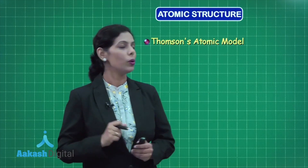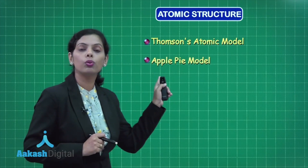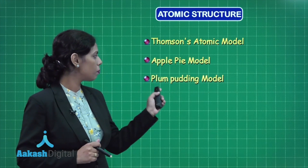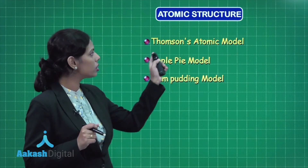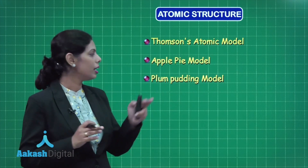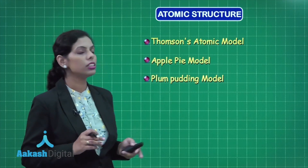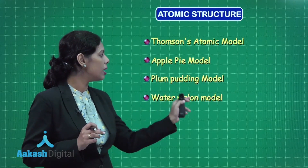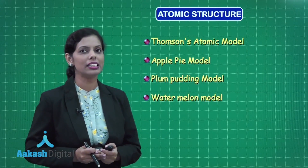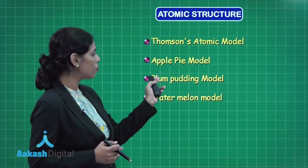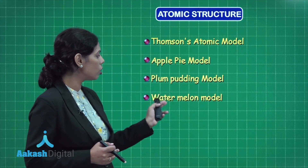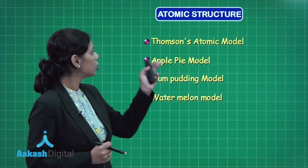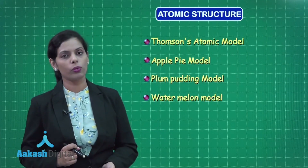Thomson's atomic model is also known as the apple pie model. Another name for it is the plum pudding model — plum pudding model and Thomson's atomic model are the same. And it is also known as the watermelon model. Quite interesting names! These — apple pie model, plum pudding model, watermelon model — are all names proposed for Thomson's atomic model.